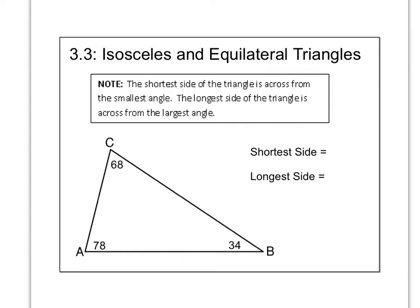Before we start, this first part isn't on your sheet, but I wanted to show you this. The shortest side of every triangle is always across from the smallest angle. So imagine your smallest angle here is 34 degrees. If you go across your triangle, this will be your shortest side. So your short side would be segment AC or side AC.